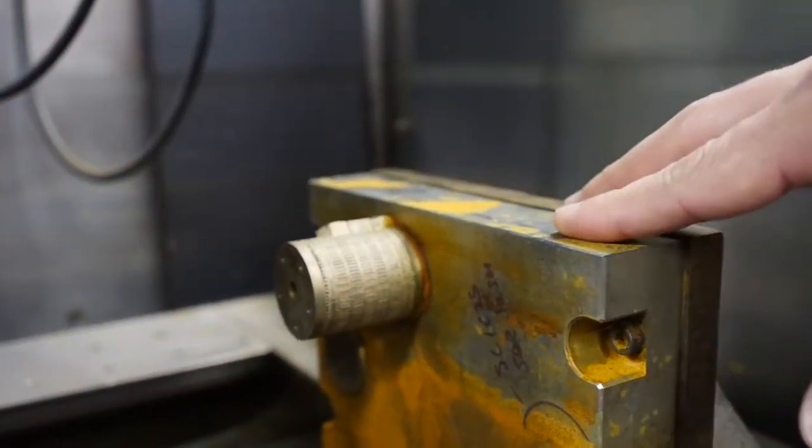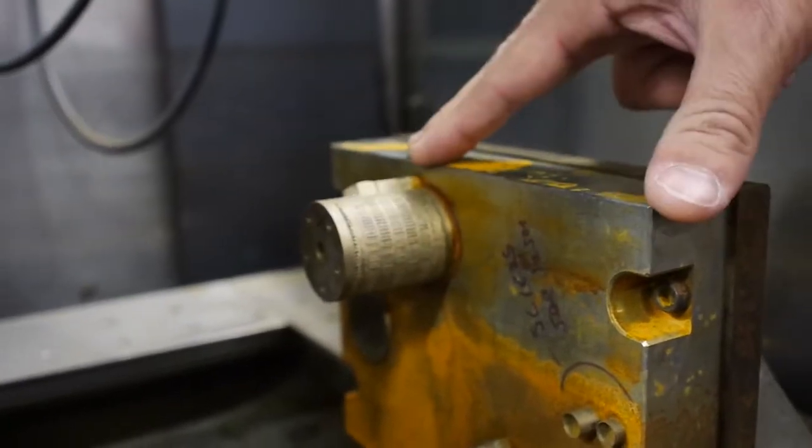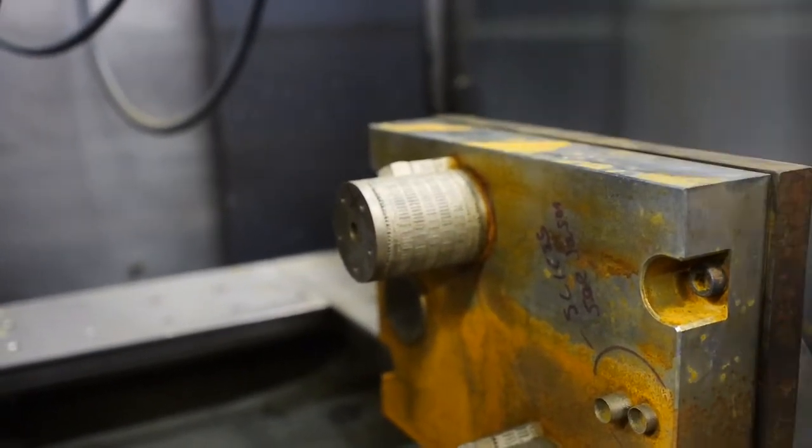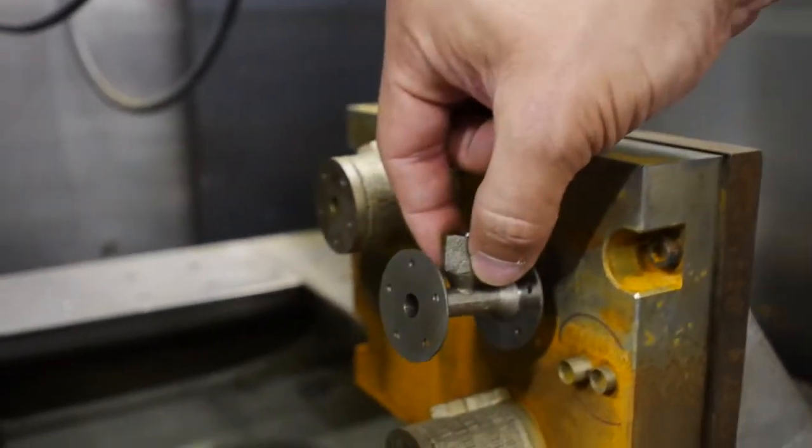So these are the parts as printed from our Pro-X 320 printer in Inconel 718. And you'll notice they look much different than the final geometry.